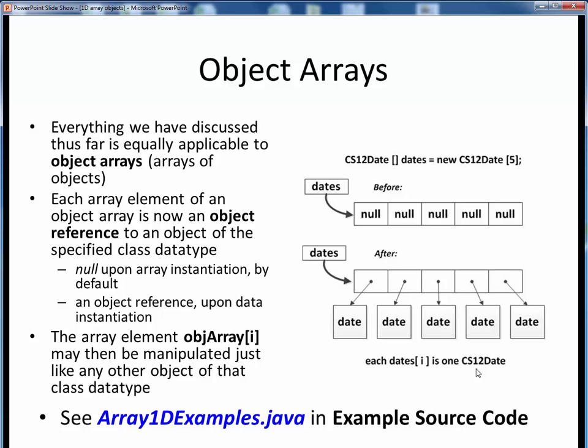Let's take a look at some examples of object arrays. As before, all these examples can be found in the example file array1dexamples.java, and I strongly encourage you to look over this example file in JGRASP or view its code walkthrough as needed.